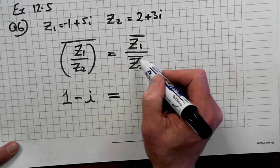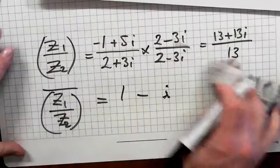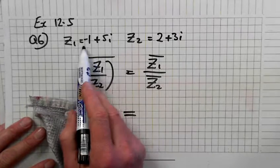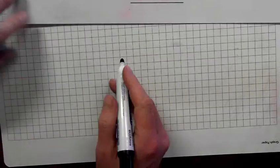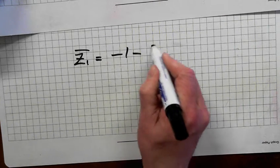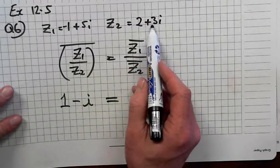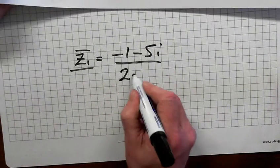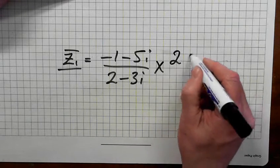Is that equal to Z1 conjugate divided by Z2 conjugate? So first of all, what's Z1 first of all again? Minus 1 plus 5i. So what's Z1 conjugate? Minus 1 minus 5i. So Z1 conjugate minus 1 minus 5i divided by Z2 conjugate 2 minus 3i. So multiply above and below by 2 plus 3i.